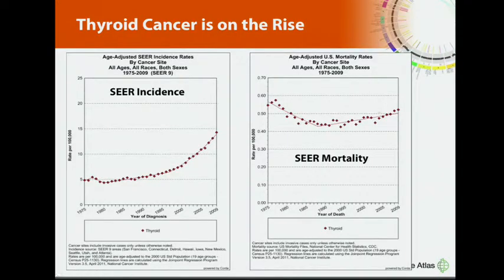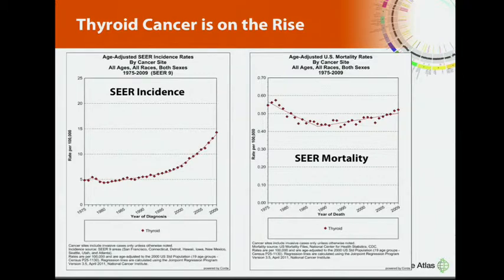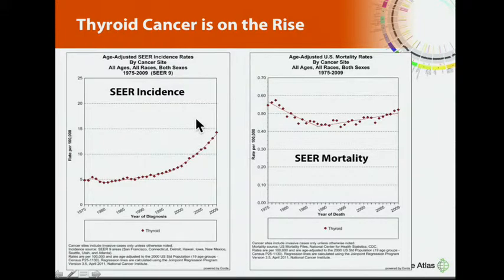I was thrilled when the TCGA announced they were going to do thyroid. Thyroid cancer can sort of get shortchanged in the big scheme of cancer. One of the reasons they did it is because thyroid cancer is clearly on the rise — though the mortality is not that high, it has trended flat and is now rising. It's one of the few cancer types actually increasing in incidence.